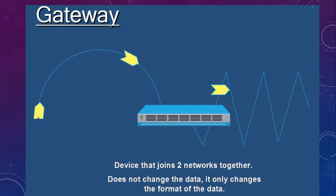A gateway is a kind of device that joins two networks together. Because our router joins two networks, that's why we call it the default gateway. By definition, a gateway is a device that joins two networks together — it doesn't change the data, it only changes the format of the data.